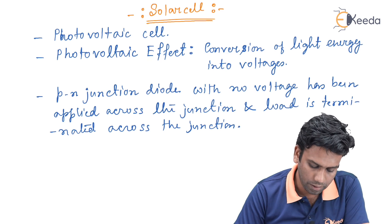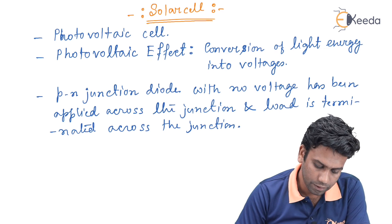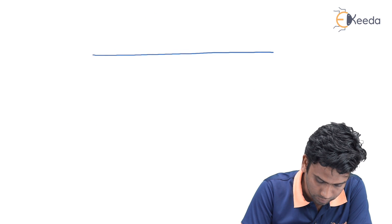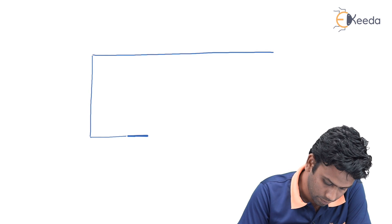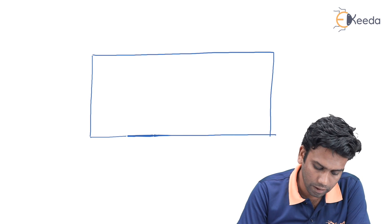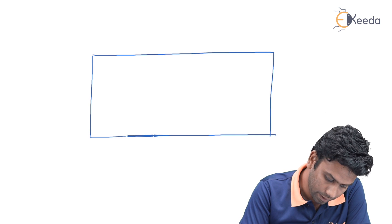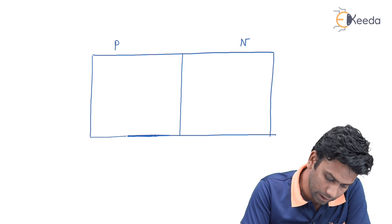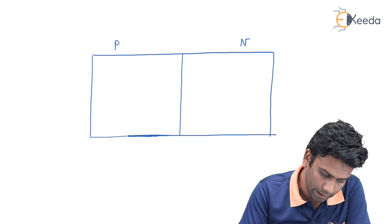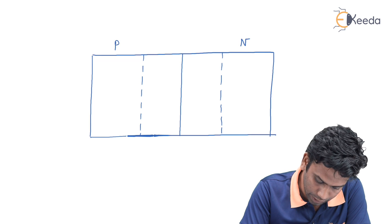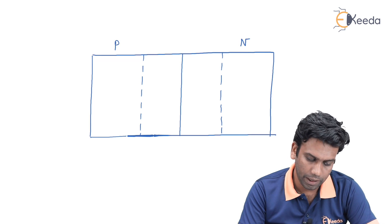Let us see what will be the operation of the solar cell. For that, let us take a p-n junction diode. This is a p-n junction diode where this is the junction between the p-type material and n-type material, and there will be a depletion region in both the n-type and p-type.